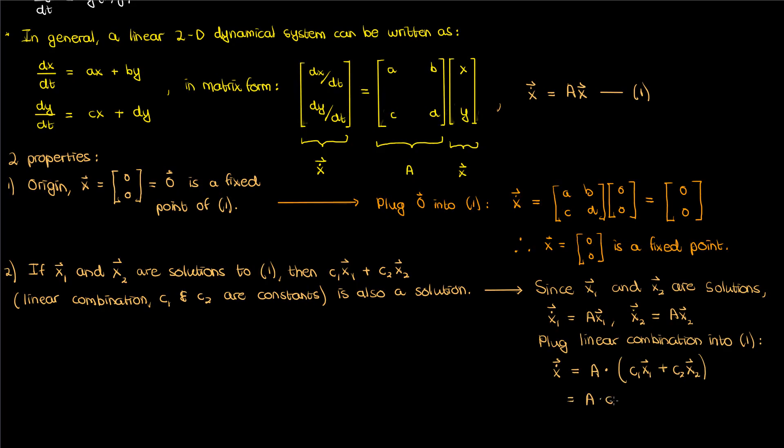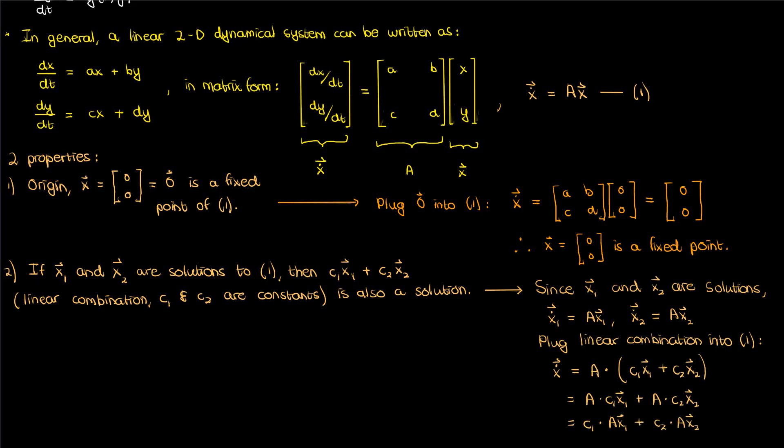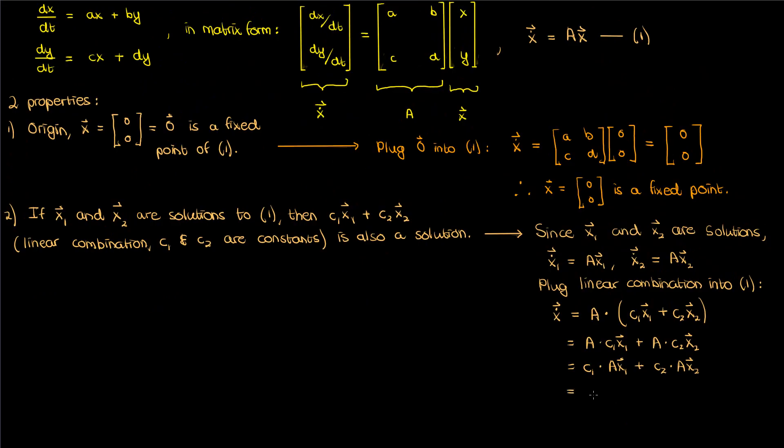If I distribute the matrix A over the summation, I end up with the following. I'll move the constants outside the A to get this more neatly packaged expression. Now A times x1 is just the derivative of x1 with respect to time, and A times x2 is just the derivative of x2 with respect to time. After all, as we stated earlier, x1 and x2 are solutions of the dynamical system in equation 1. If we make those substitutions, we'll end up with this equation.